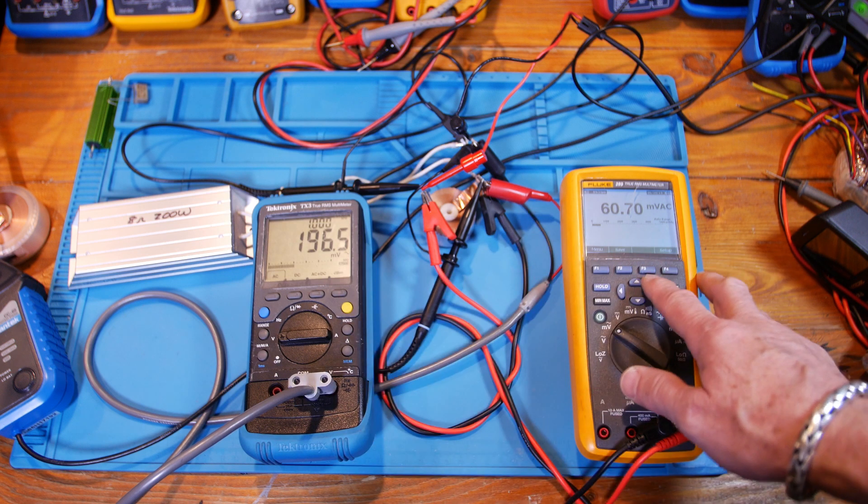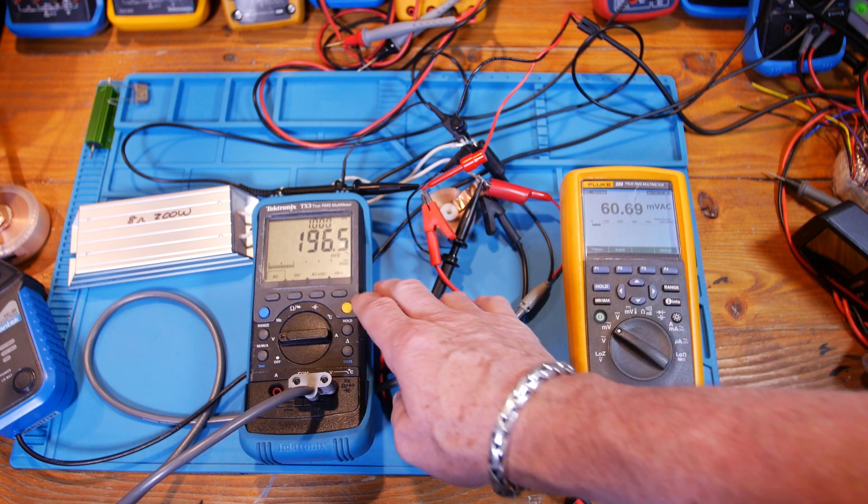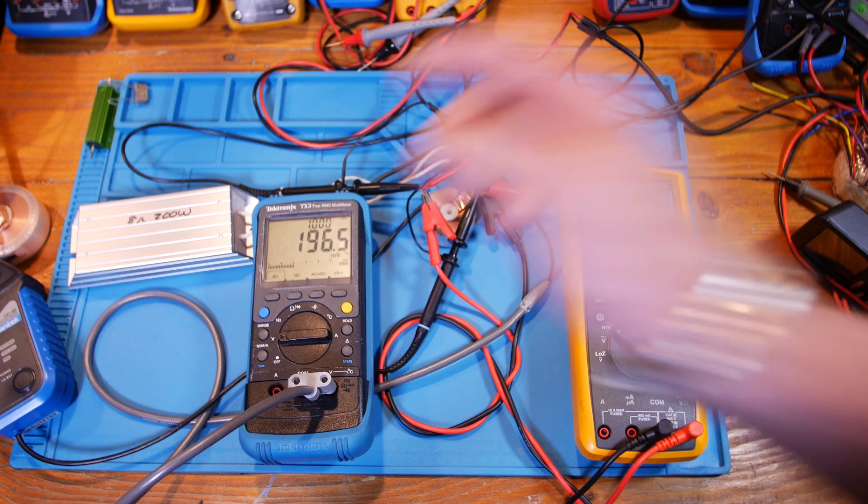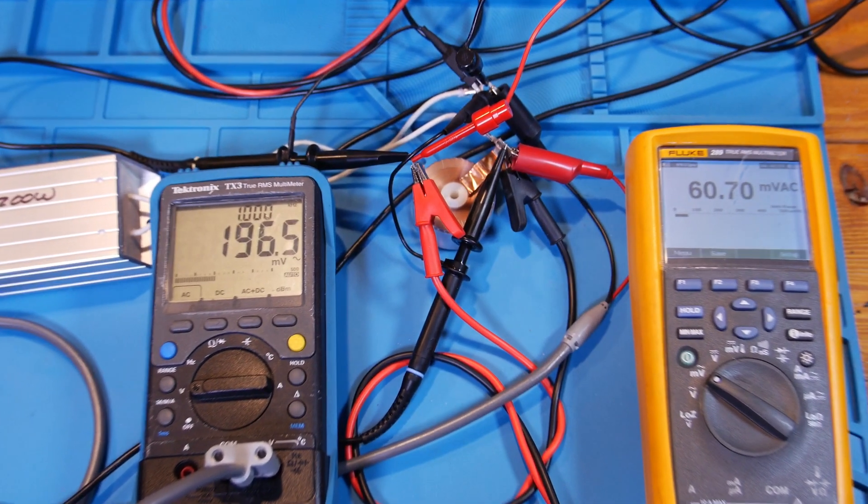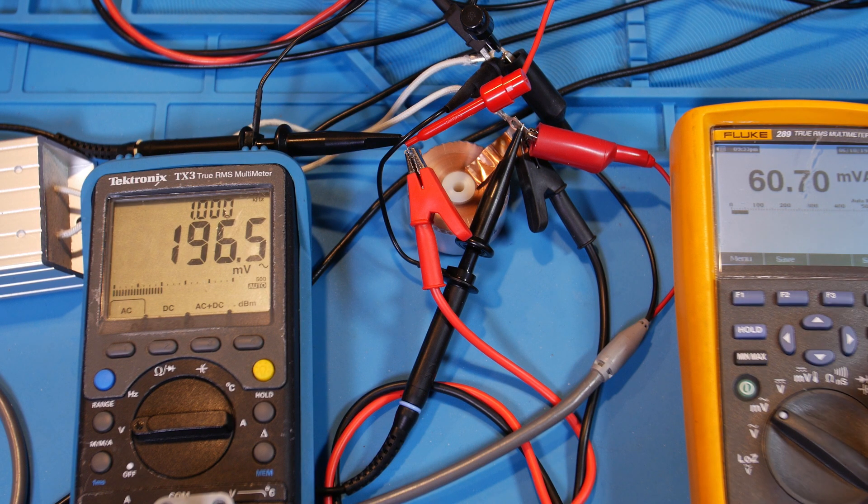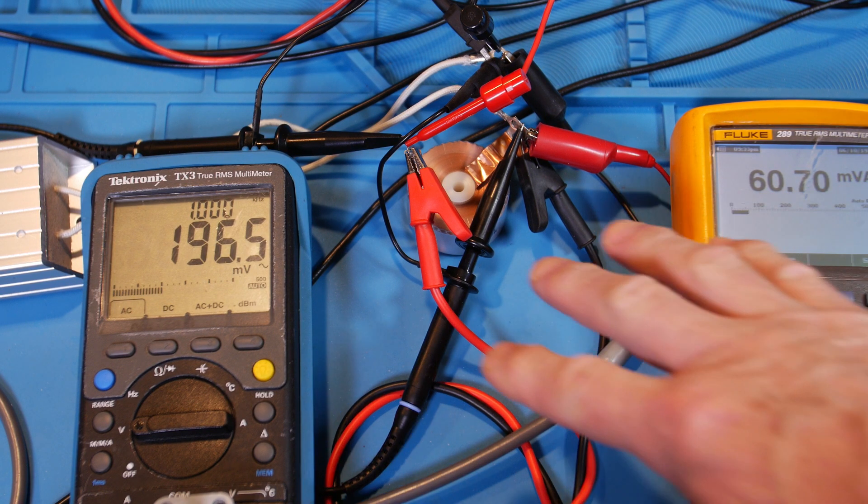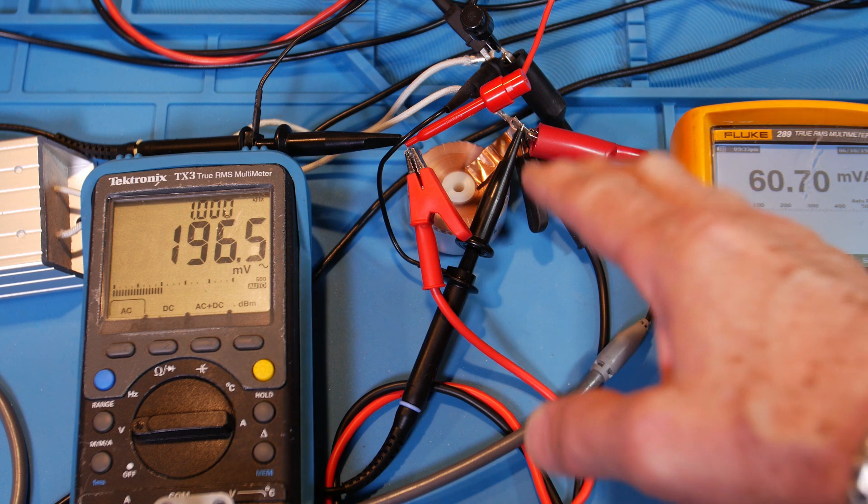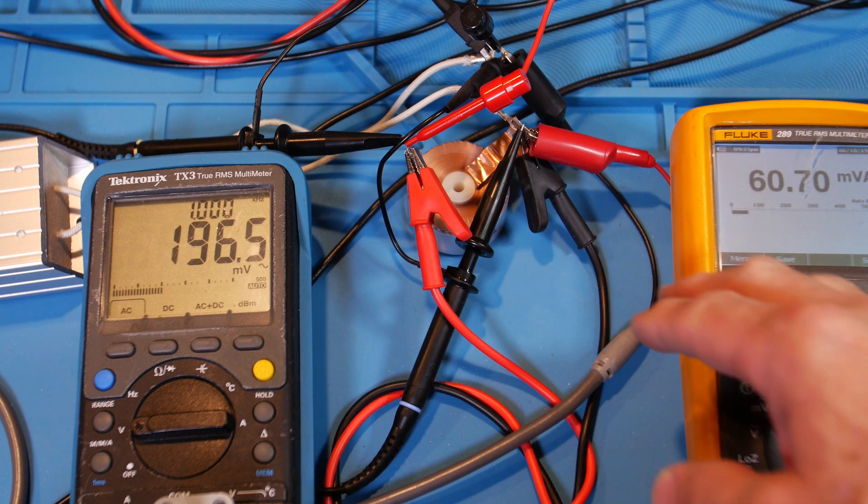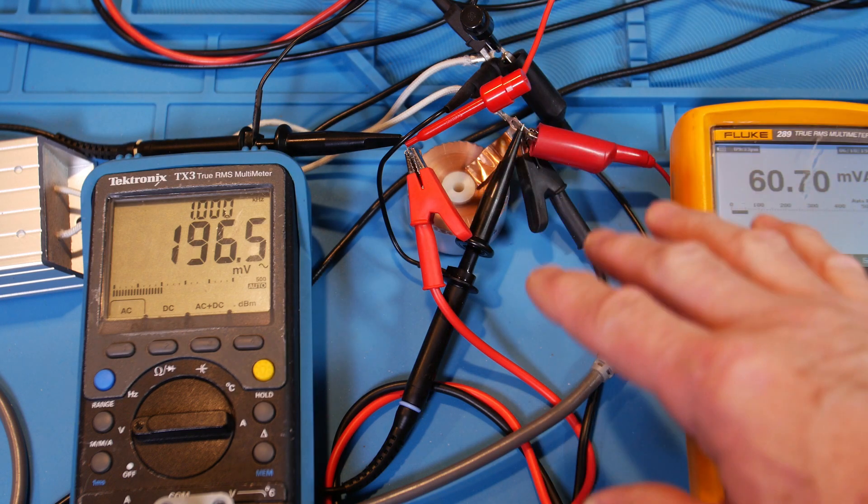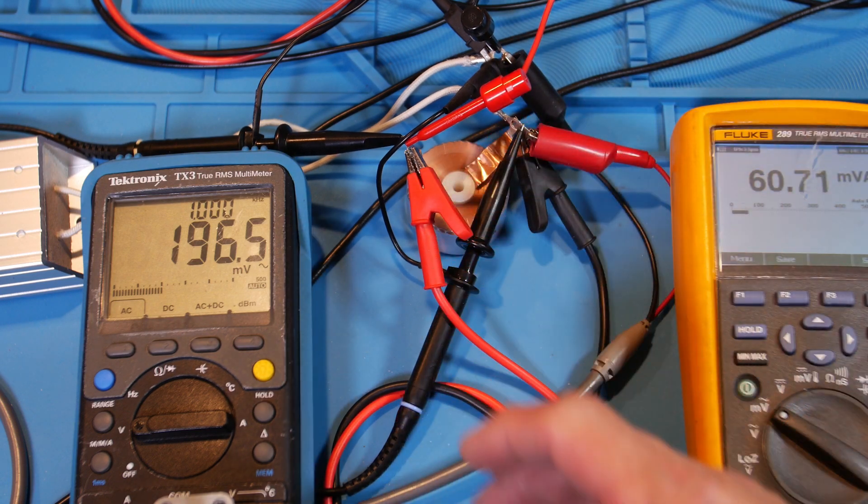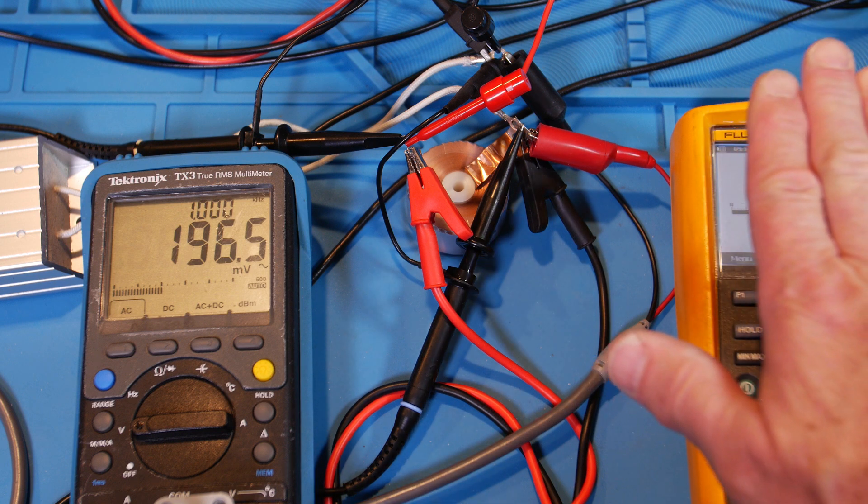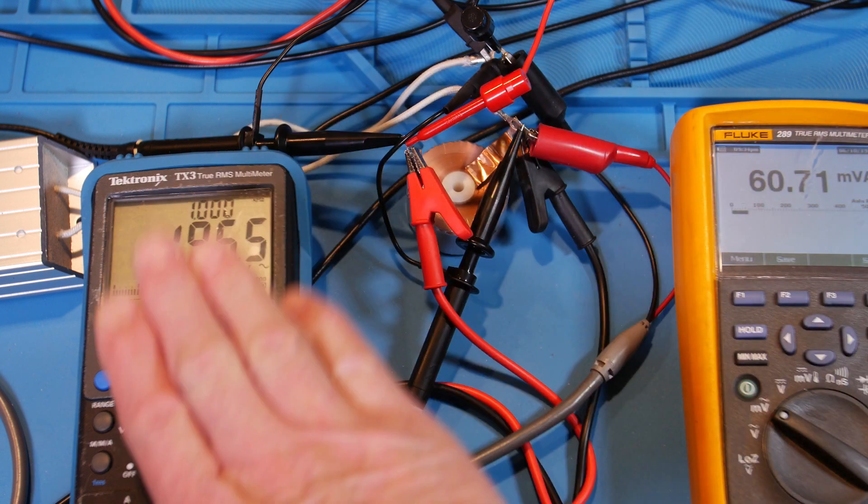So now what we're going to do is these multimeters are set to read AC voltage and millivolts. Right now, we're seeing 196.5 here, and this frequency is 1 kilohertz. And then this guy's 60.7. So what we want to do is increase the frequency where we know the inductor is X of L. So reactance X of L is equal to 2 pi FL. As frequency goes up, X of L goes up. So it's a choke, right? It chokes off frequency.